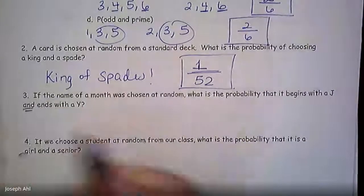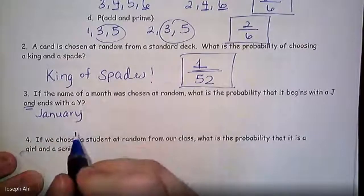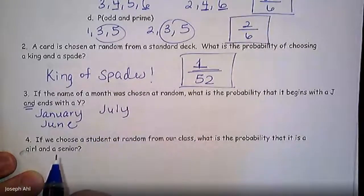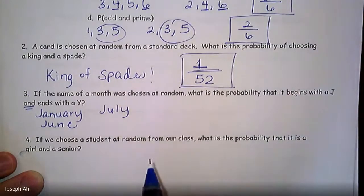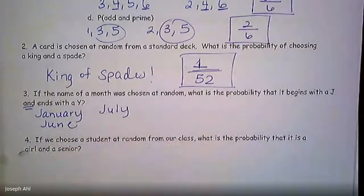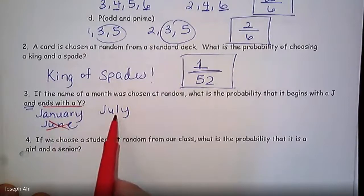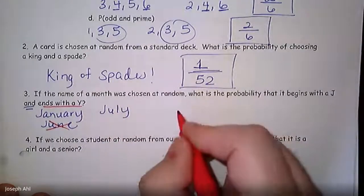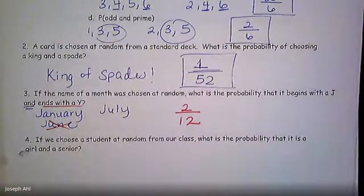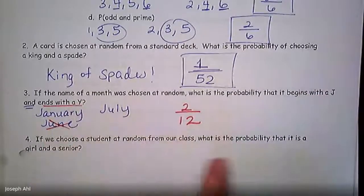If the name of a month is chosen at random, what's the probability that it begins with J and ends with Y? Months that begin with J are January, June, and July. But it also has to end with Y, so we cross off June. We're left with January and July — 2 months out of 12 total begin with J and end with Y, so the probability is 2 out of 12.